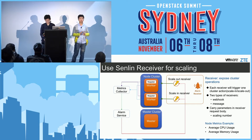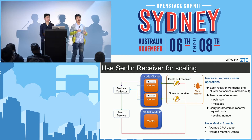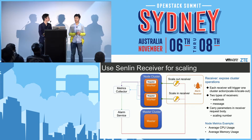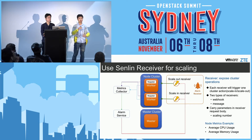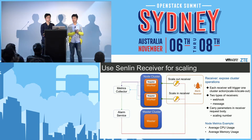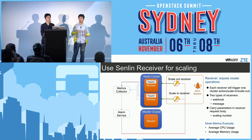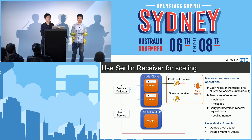In Senlin we support two types of receiver. The first is the webhook receiver: if I create a webhook receiver for a specific cluster, I get a webhook URL. Sending a POST request to this URL triggers Senlin to perform the specified cluster action, for example scale-out. The second is the message receiver: Senlin listens on a message queue service like Zaqar and waits for a signal message, then triggers the action. You can also include parameters in the request body, such as how many nodes to scale in or scale out for that specific cluster operation.